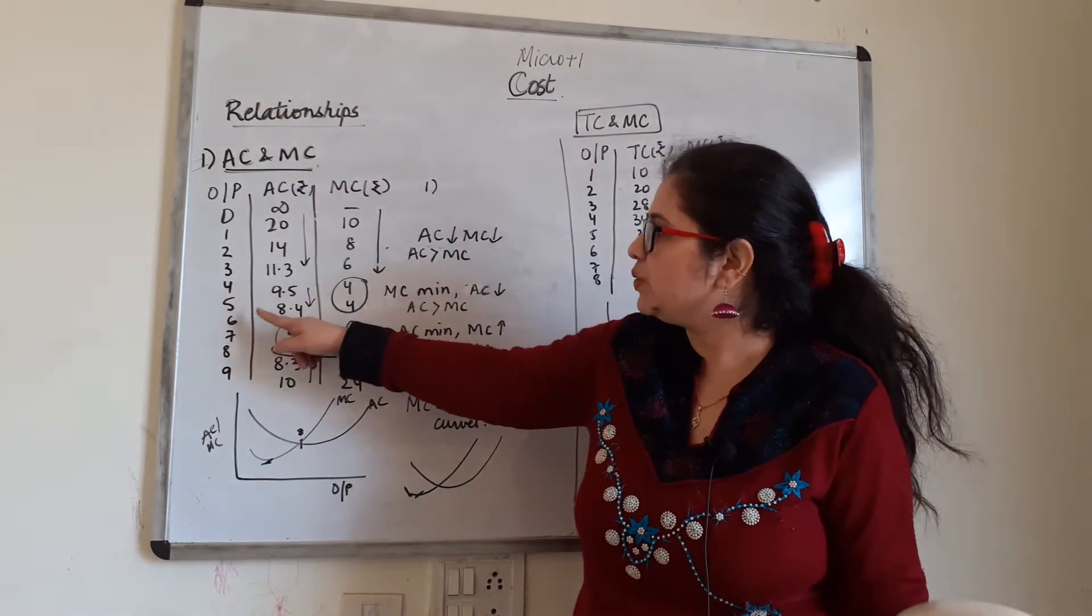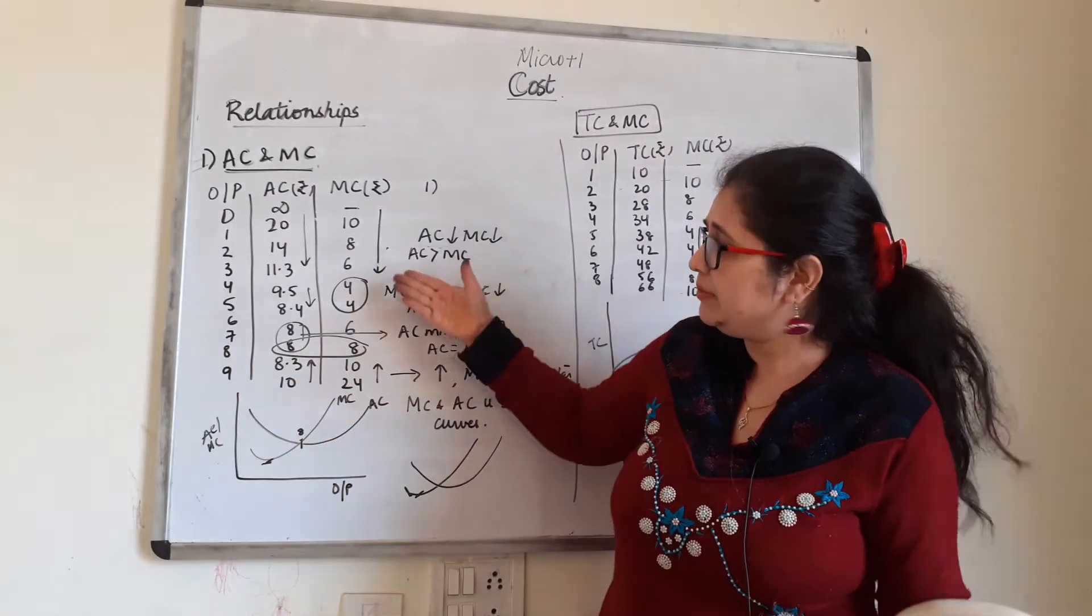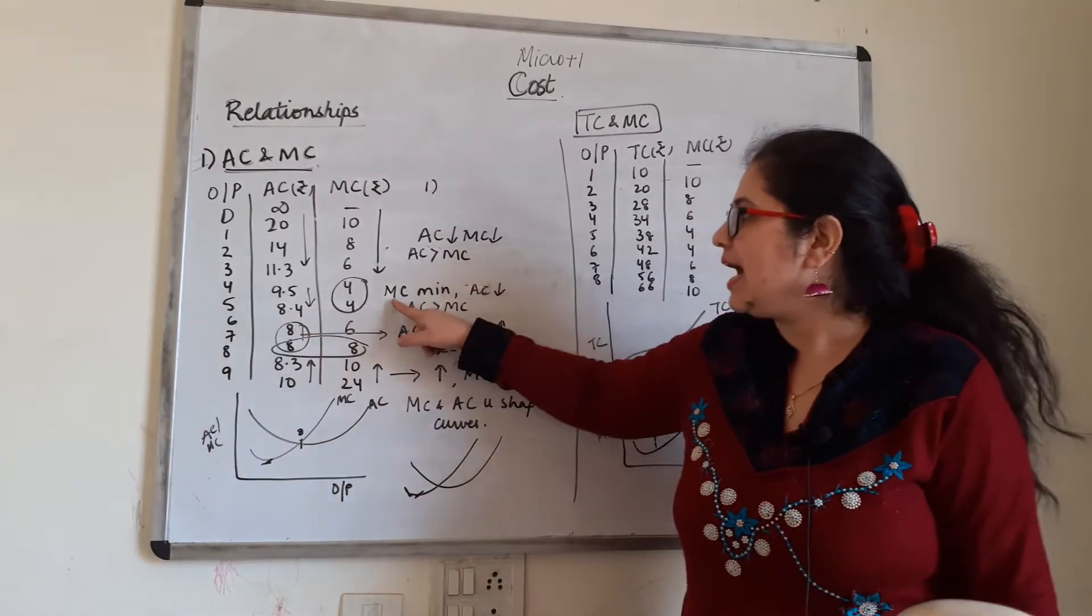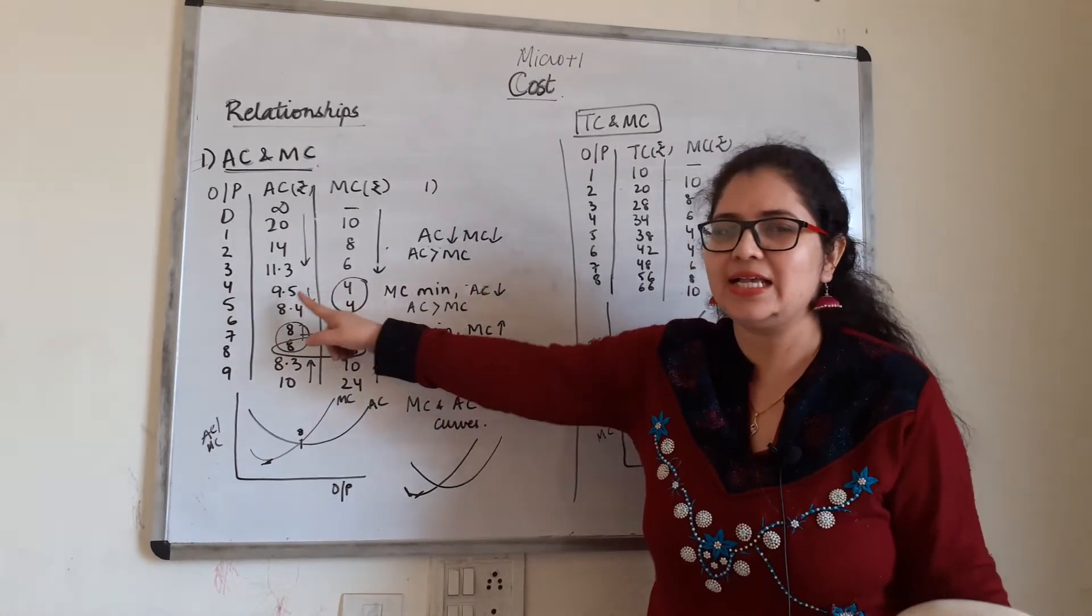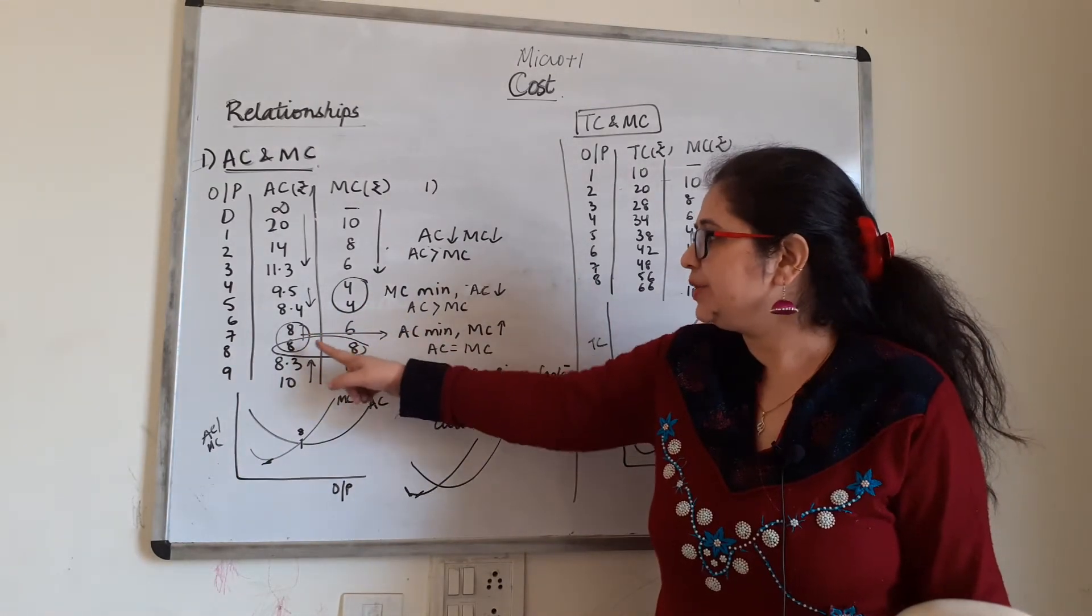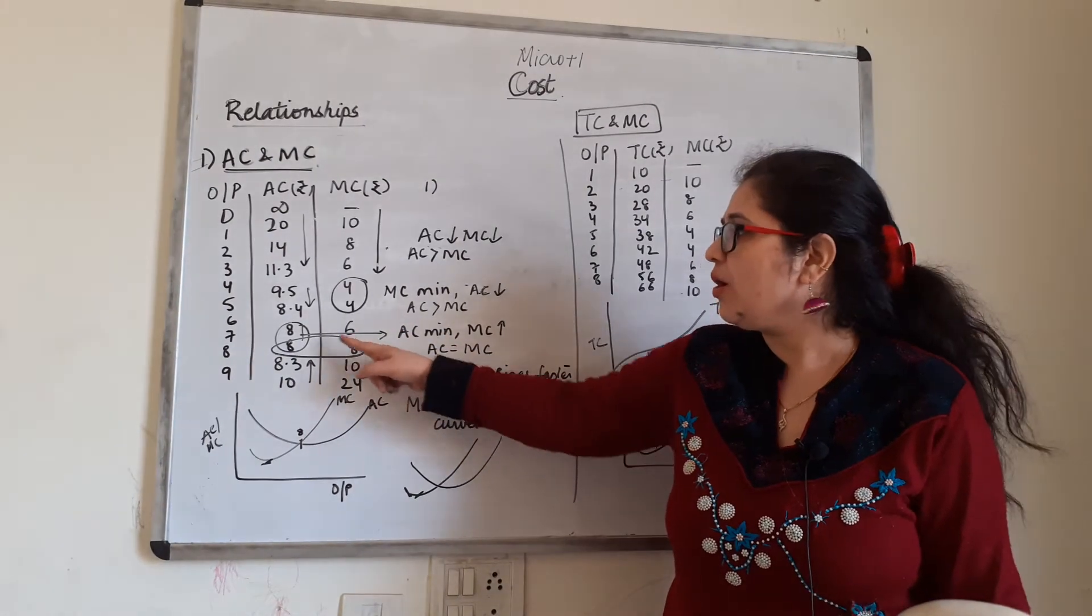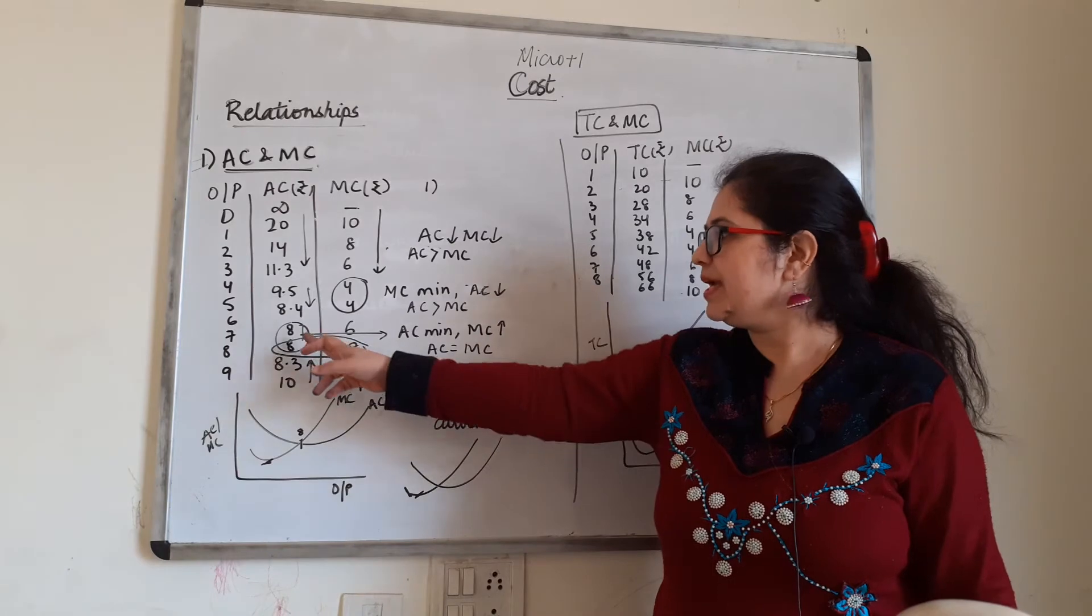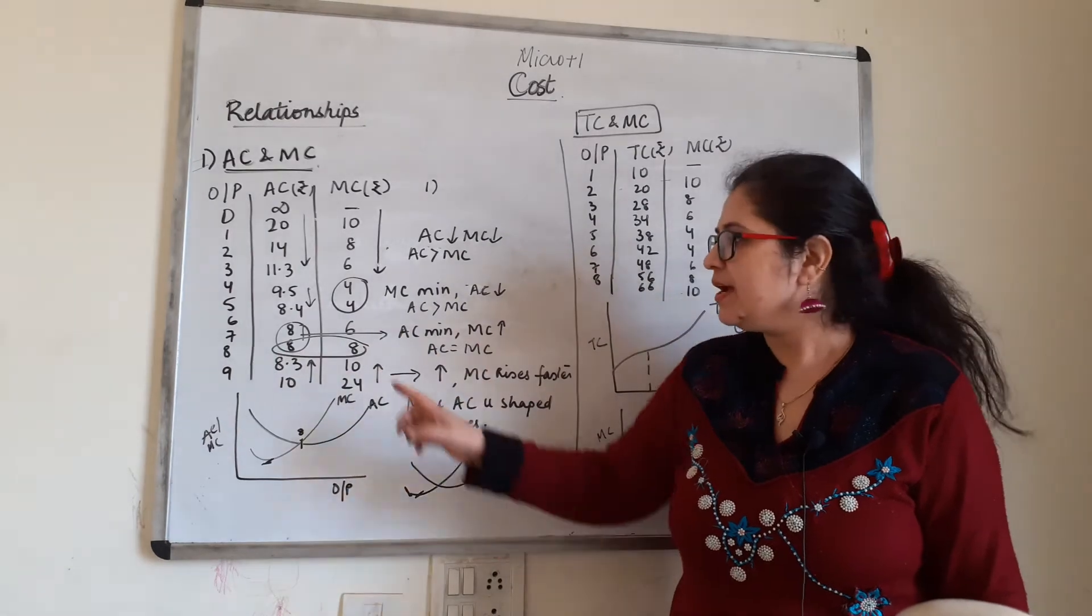Then what is happening? Fourth and fifth unit, AC is still falling. But MC becomes minimum and constant. I'm saying it's minimum. Look, 4-4, there's no other figure of 4. It's minimum and constant. So I'm going to write this only. I'll say MC is minimum, AC is falling. But AC is still greater than MC. Ahead, seventh and eighth unit, AC is minimum and constant. But MC has started increasing. 6 became 8. And AC equals MC on eighth unit.